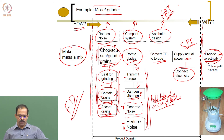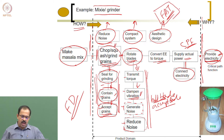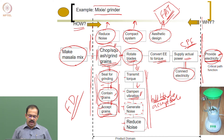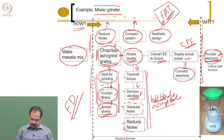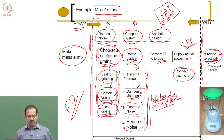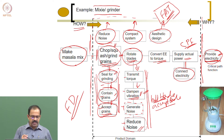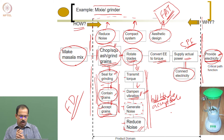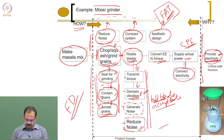FAST stands for Function Analysis System Techniques. It allows you to identify all sub-functions in the product and then design products based on these functions. You can design better methods to reduce noise, dampen vibration, or improve sealing. By looking at these functions you can identify how the product can be improved or made more innovative compared to existing products.